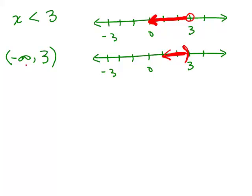Notice this looks like an ordered pair — it is not. You have to take it in context, just like a word can be pronounced differently depending on the sentence. For example, the word 'read' could be said two ways. It's the same here: we're talking about a solution in interval notation for inequalities, so this is not an ordered pair.